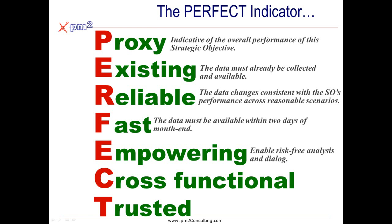To do that, it should be cross-functional. An indicator like absenteeism covers the scope of different processes within leadership, compensation, culture, environment, and so forth. Because it's cross-functional, it's empowering. And because it's cross-functional, it forces organizations to take a broader look at potential issues.